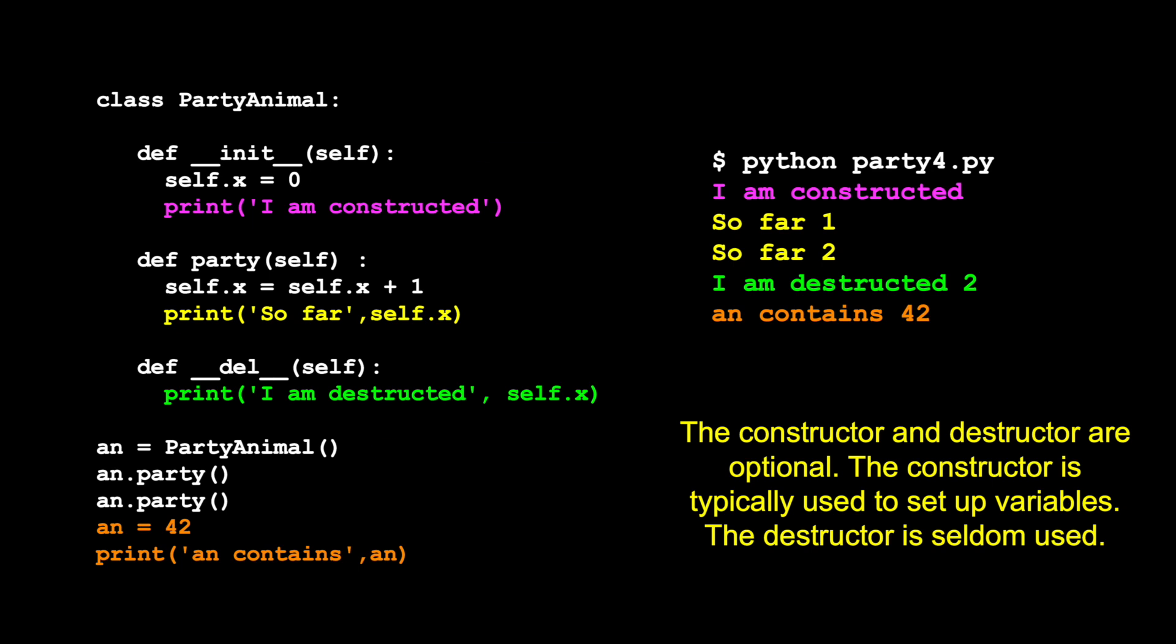Let's go ahead and run this. This is the constructing of it. This line right here is causing the 'I am constructed' message to come out. Then we do an.party and an.party, and that says one and two. Here's an interesting thing: we're actually going to destroy this variable by throwing away an, which no longer points at that object. An is going to point to 42. We're going to overwrite an and put 42 in it. At that point, Python's like, oh, this whole little object that I just created is vaporizing and throwing it away. Before this line completes, it actually calls our destructor on our behalf.